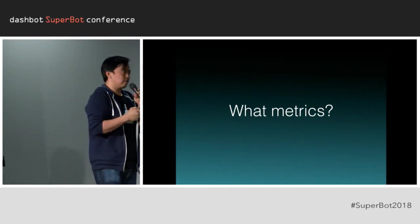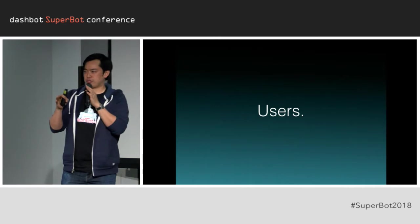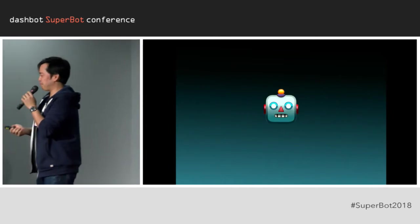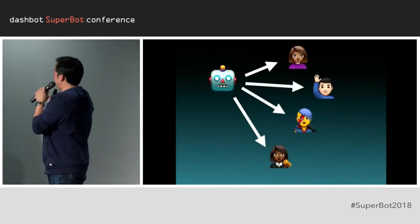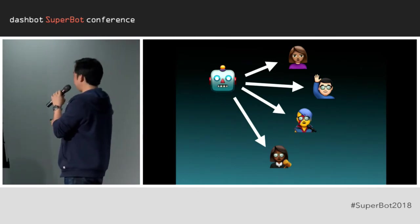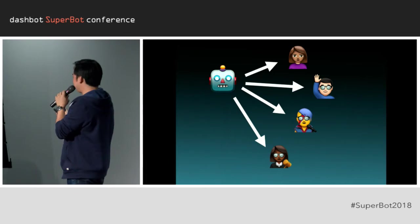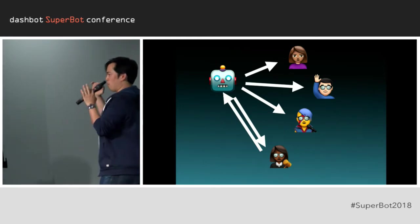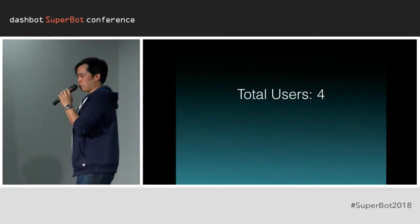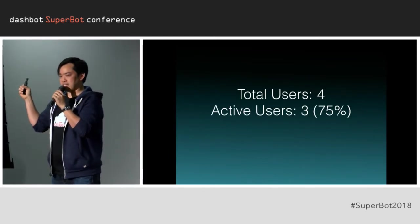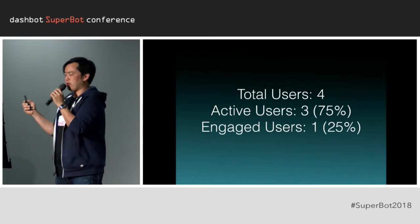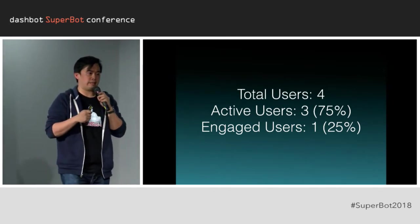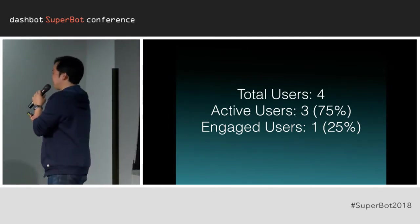What metrics are important when dealing with conversation? There's users, of course. But in bots, there are a few different concepts. If you have a bot sending messages to four people, the glasses icon indicates they've read the messages. Then our friend at the bottom actually replied. This means you have a total of four users — three are active because they've read the message, and one is engaged because they've replied.